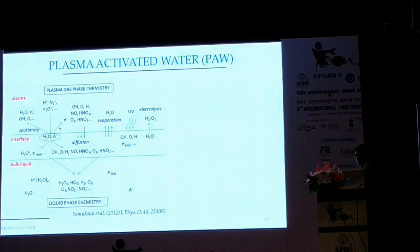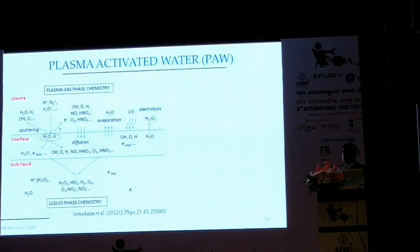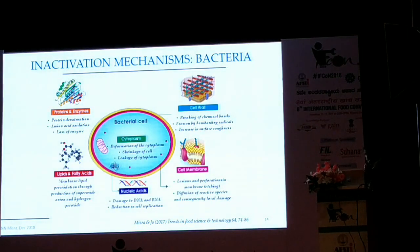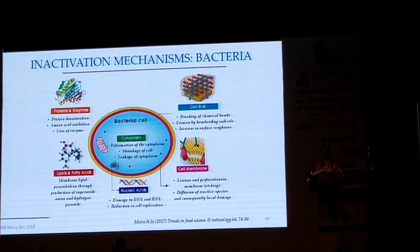Another concept is plasma-activated water: you take the plasma-treated gas phase and let it diffuse into a liquid. The reactive species that form in the liquid are very stable and can be kept for up to weeks, so you can use them for washing fruits and vegetables. In the liquid, they produce nitrite, nitrate, and peroxide at micro-molar concentrations. This is the proposed mechanism for how these species act on bacteria - attacking proteins, lipids, fatty acids, and nucleic acids.